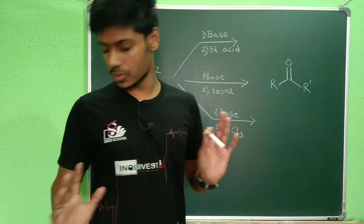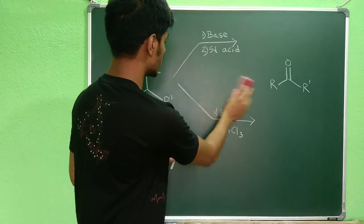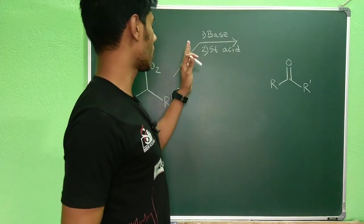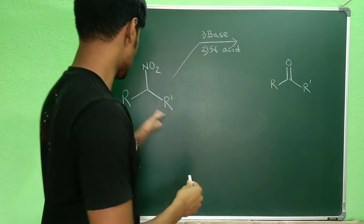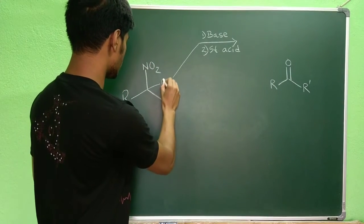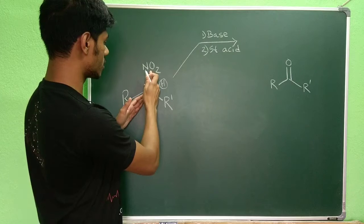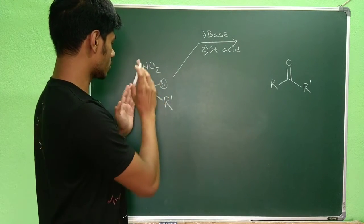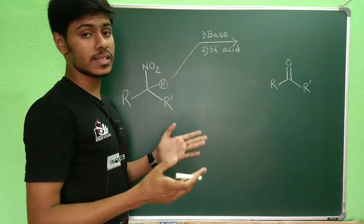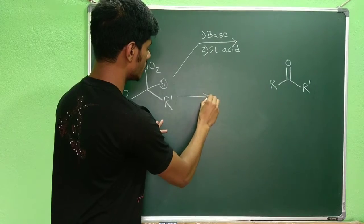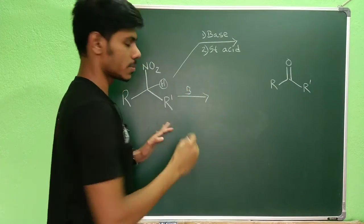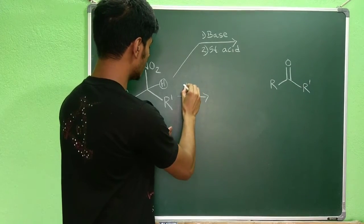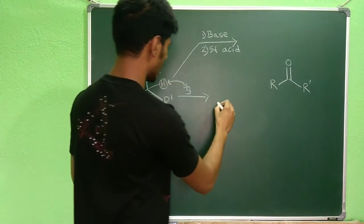Let us first discuss pathway one. You don't need a strong base — you can use a weak base, because the alpha hydrogen with respect to the nitro group, directly attached to the carbon bearing the nitro group, is relatively acidic. So when you treat this with a base such as DBU or sodium hydroxide, the base will abstract this hydrogen.